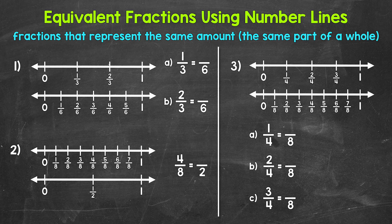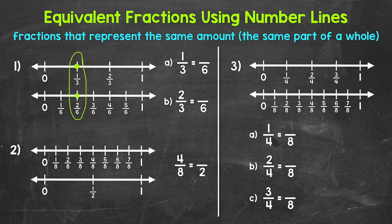Let's start with part A of number one: one third is equivalent to how many sixths? Looking at one third right here, right below we can see that two sixths is at the same place on the number line. One third and two sixths are at the same place between 0 and 1 — they are the same distance from 0. So one third and two sixths are equivalent fractions.